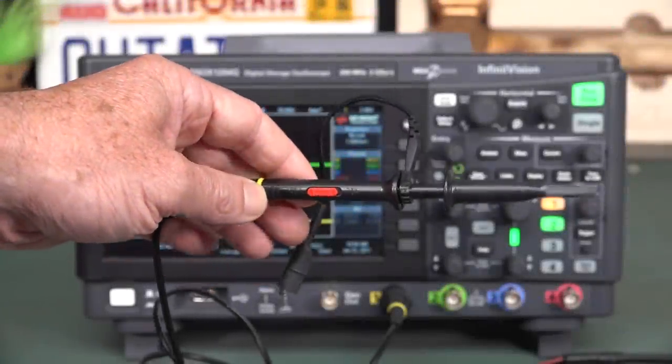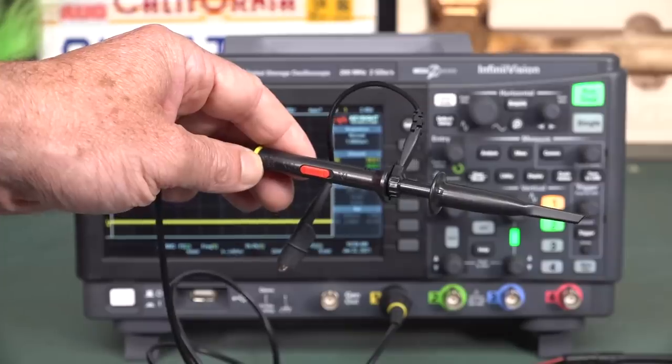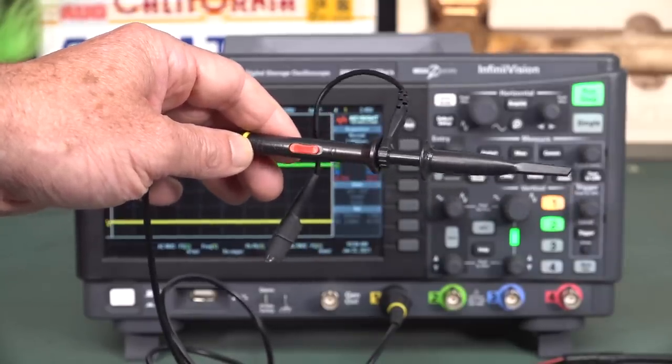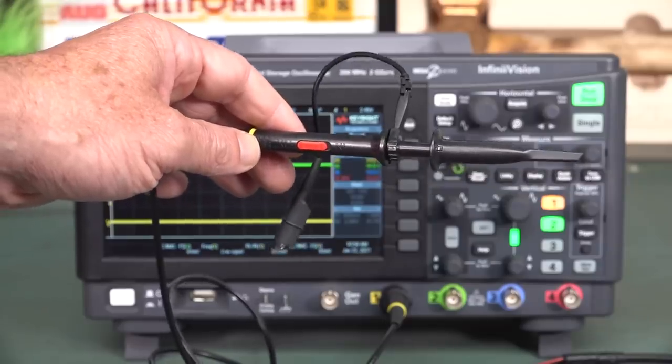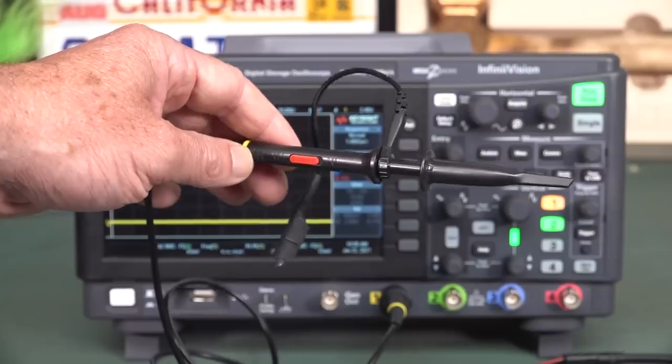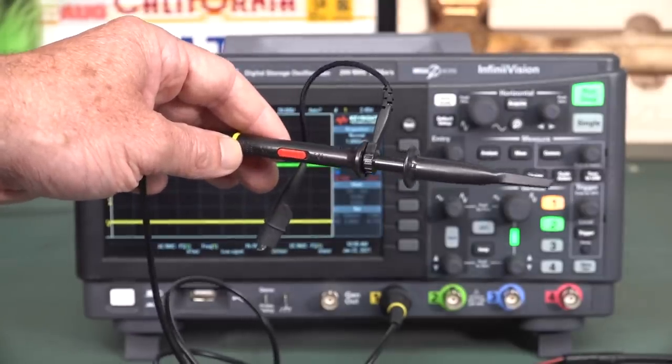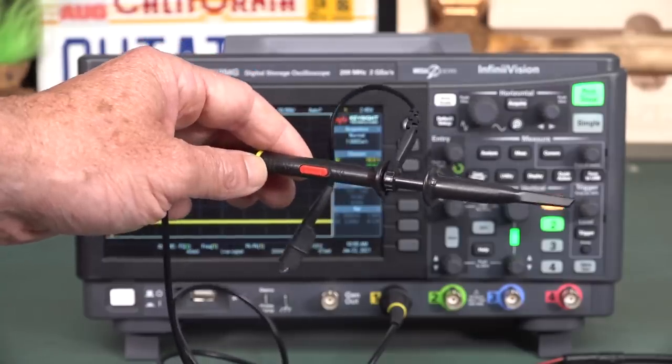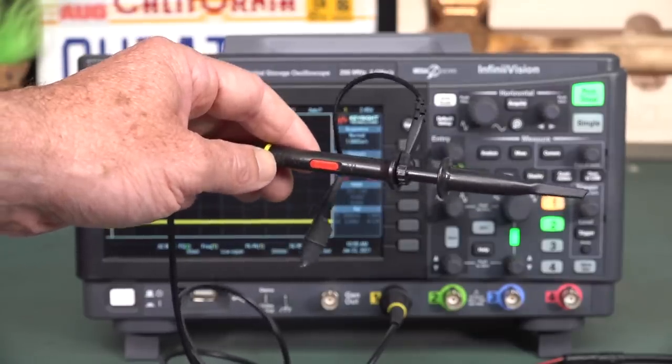Hi, this is the humble oscilloscope probe, switchable times one, times ten that you no doubt got with your low-end scope. And this might be all you'll ever need in terms of oscilloscope probing. But there's more likely than not, you're going to need at one point another type of oscilloscope probe for different purposes.